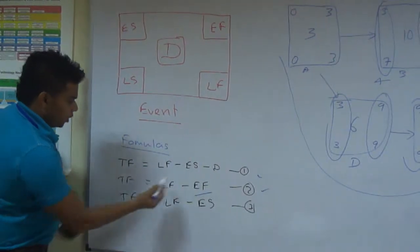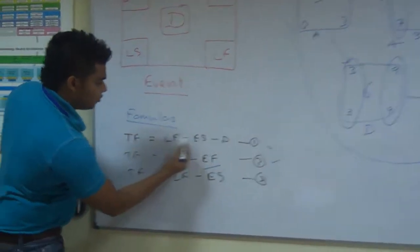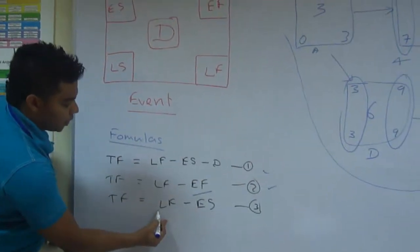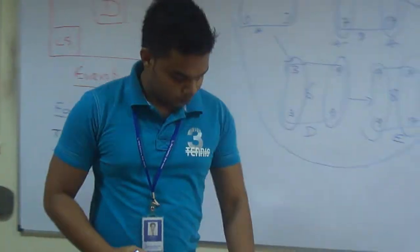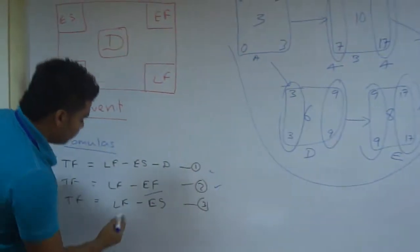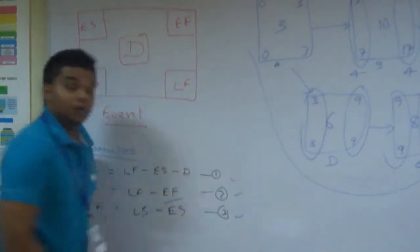And similarly we have another equation. We can have LS minus ES here. LF minus D. You end up with LF minus D. You can have LF minus D. You can have LS. That gives you the equation.